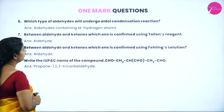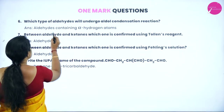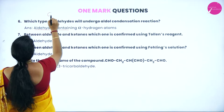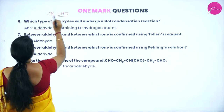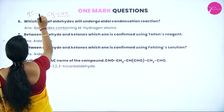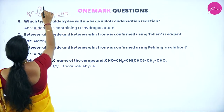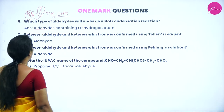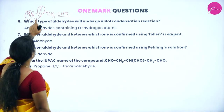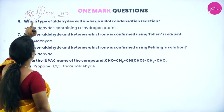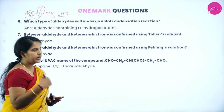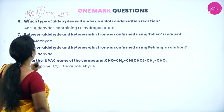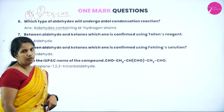What type of aldehyde will undergo aldol condensation? Aldehydes containing an alpha hydrogen atom will undergo aldol condensation. For example, CH₃CHO (acetaldehyde): the carbon next to the carbonyl group is the alpha carbon, and the hydrogens on it are the alpha hydrogens. In CH₃CHO, there is one alpha carbon atom and three alpha hydrogen atoms. Aldehydes must contain alpha hydrogen atoms to undergo aldol condensation.